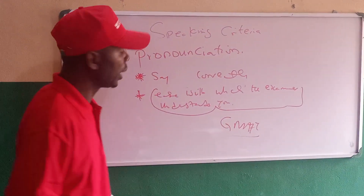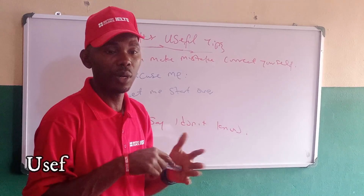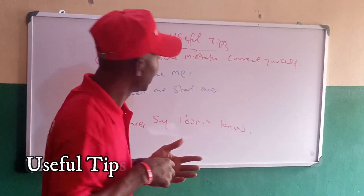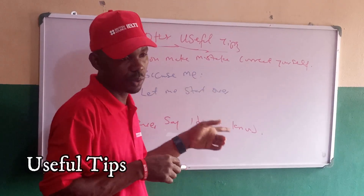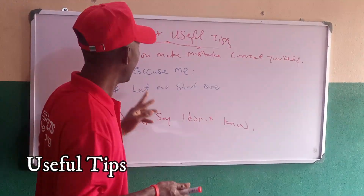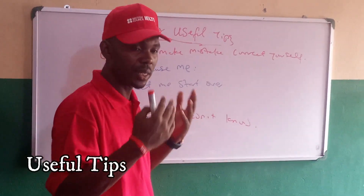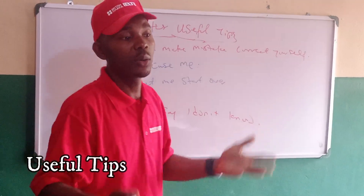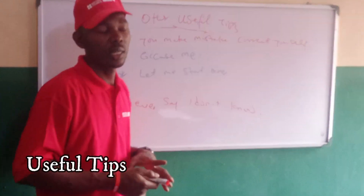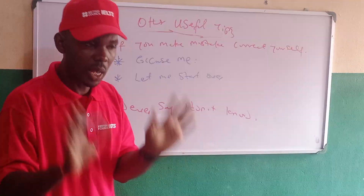So those are the four speaking criteria. If you are speaking and you make a mistake, it's expected that you correct yourself. If you use the wrong word or wrong phrase, correct yourself by using the phrase 'excuse me,' then say the correct thing — whatever you said before is still counted. Then if you discover you were completely disconnected and what you were saying is not in line with the question, use the phrase 'let me start over.' Once you use this phrase, what you said before is no longer held against you — it's what you say after that counts.